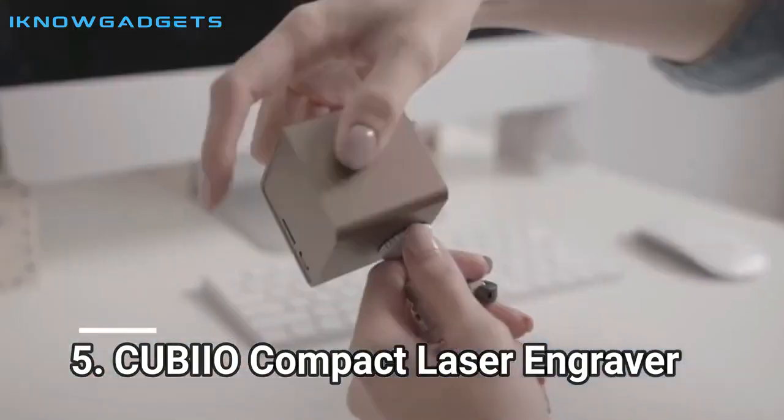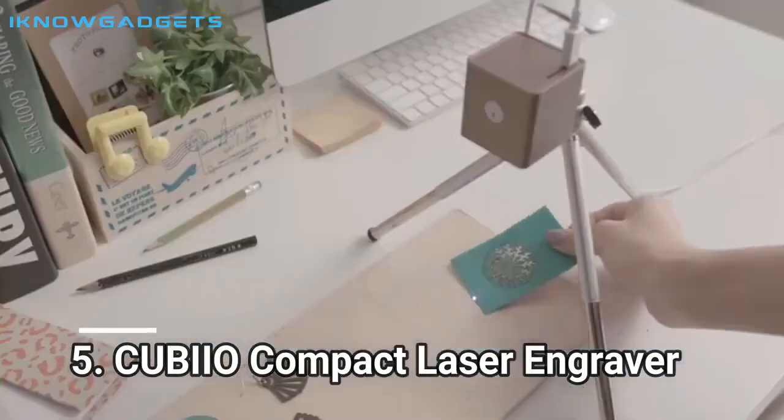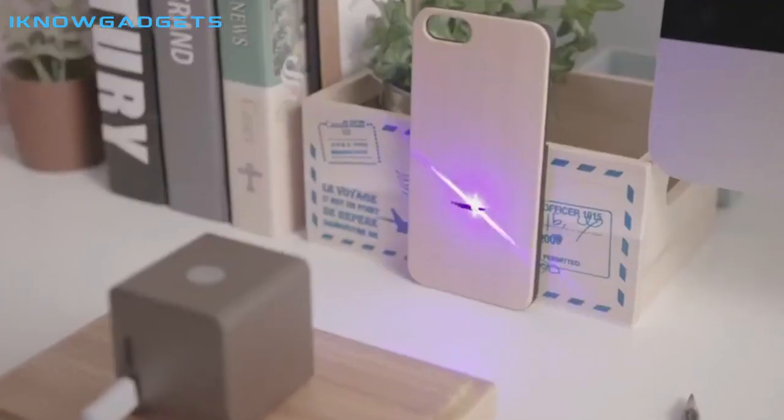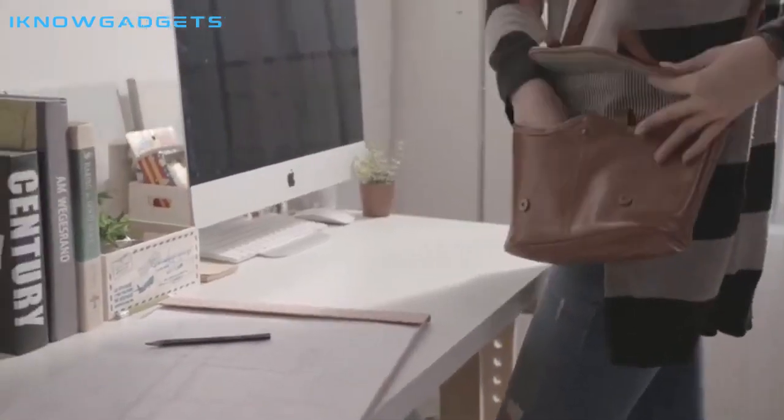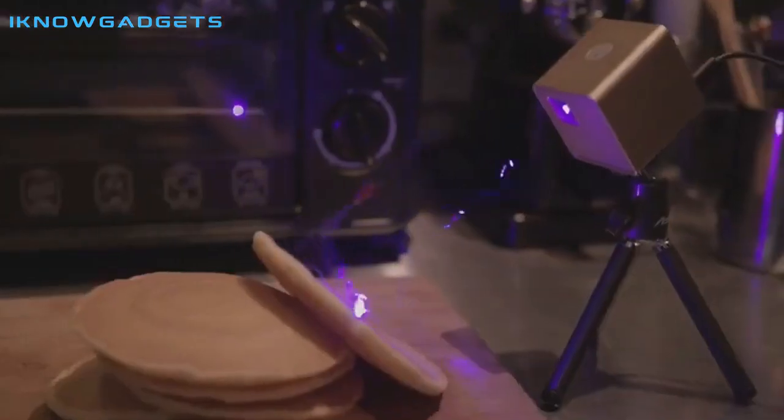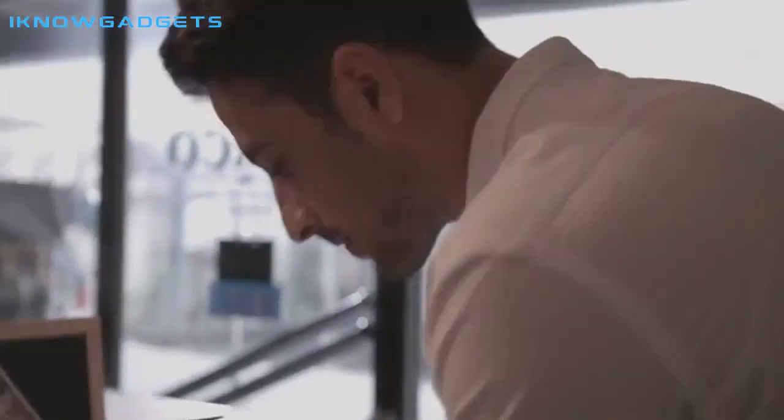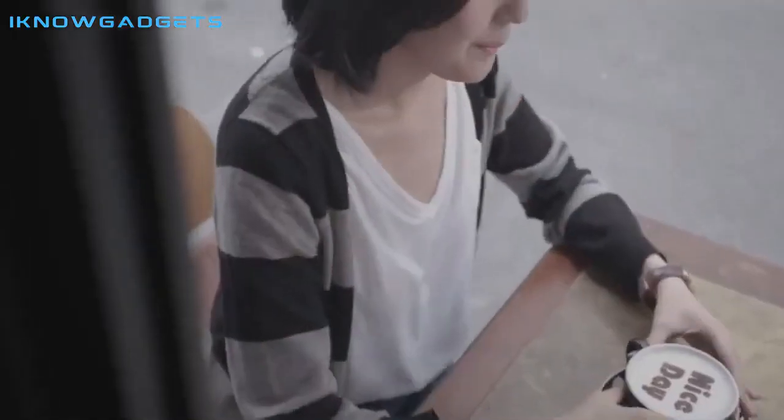Number 5. QBO Compact Laser Engraver. The QBO Compact Laser Engraver is a great tool for those looking to add a personal touch to their projects. With this laser engraver, you'll learn all about the features of this mini-portable engraving machine, like its smartphone control, password lock, and motion detection shutdown.